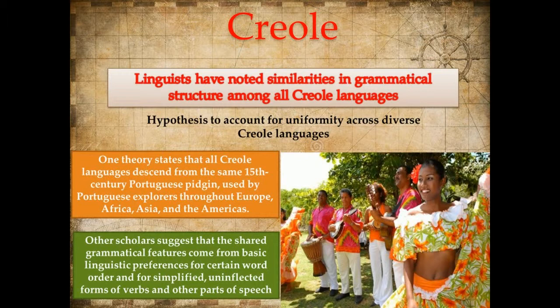One theory states that all creole languages descend from the same 15th-century Portuguese pidgin used by Portuguese explorers throughout Europe, Africa, Asia, and the Americas. When this pidgin encountered the languages of later colonizers, the basic grammar remained while the vocabulary incorporated new words from languages such as French and English. However, this hypothesis does not explain why some pidgins and creoles that developed with little or no contact with European languages still share grammatical features. Other scholars suggest that shared grammatical features come from basic linguistic preferences for certain word order and simplified, uninflected forms of verbs and other parts of speech.